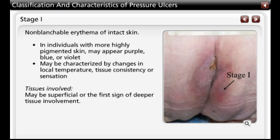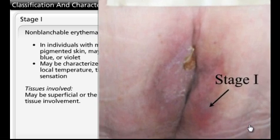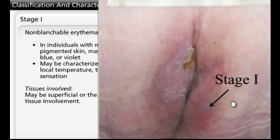A Stage 1 pressure ulcer presents as intact skin with non-blanchable redness of a localized area, usually over a bony prominence. Darkly pigmented skin may not have visible blanching, and its color may differ from the surrounding area. The area may be painful, firm, soft, warmer, or cooler as compared to adjacent tissue.